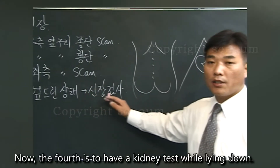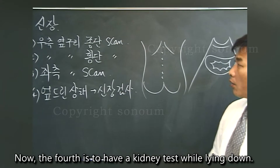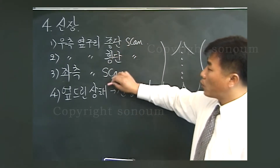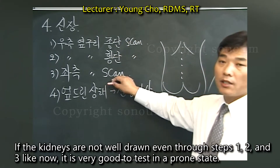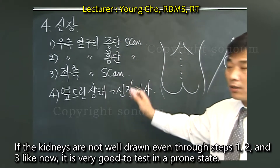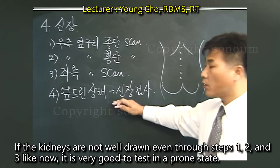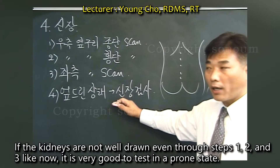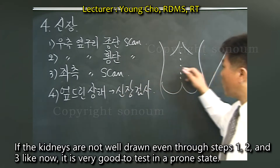The fourth method is to perform a kidney test while lying down. If the kidneys are not well visualized even through steps 1, 2, and 3, it is very good to test in a prone state.